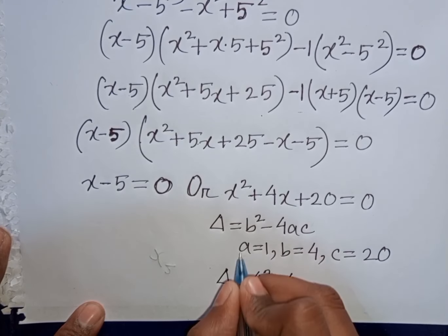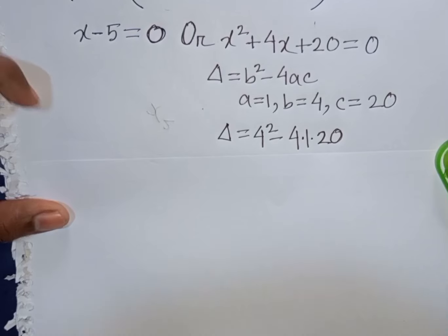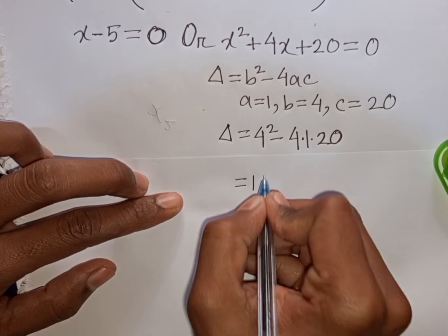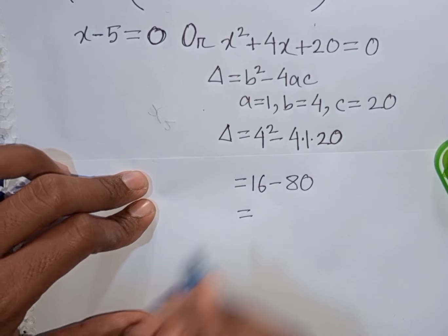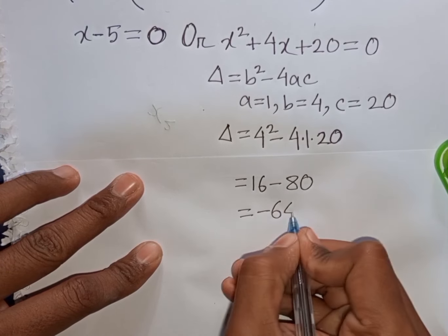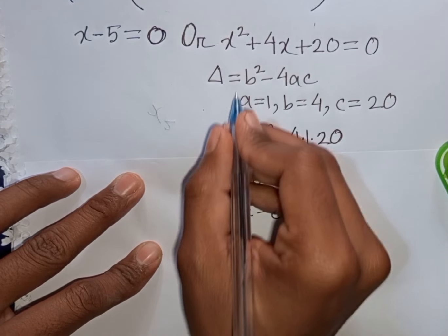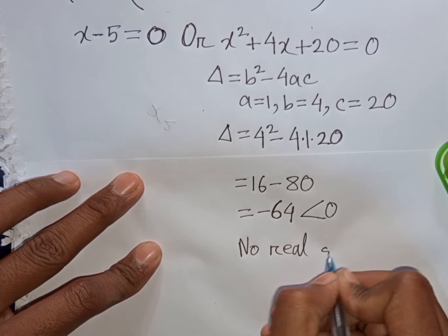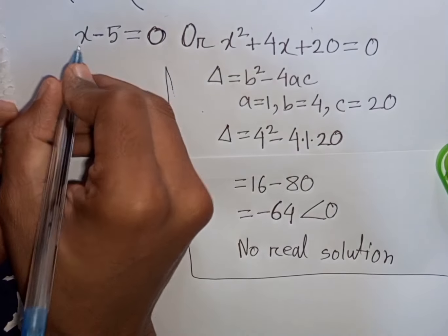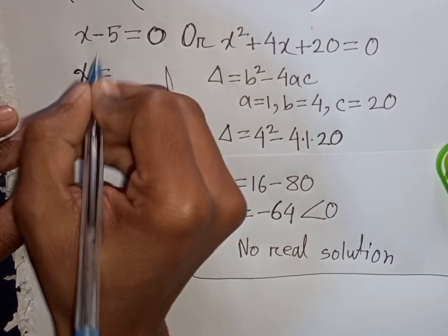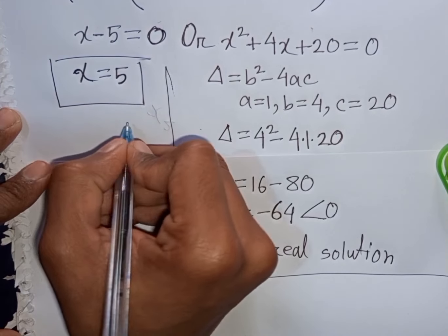So delta = 4² - 4 × 1 × 20 = 16 - 80 = minus 64. Since minus 64 is less than 0, there is no real solution from this quadratic. From x - 5 = 0, we get x = 5. So x = 5 is the final answer.